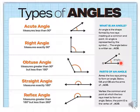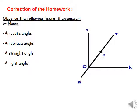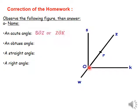Don't forget that an angle consists of two sides and a vertex. Now this is the correction of our homework. Observe the following figure and name an acute angle — a small angle. Here it's an acute angle; we put the vertex in the middle, so we call it angle SOZ. Another acute angle is angle ZOK.